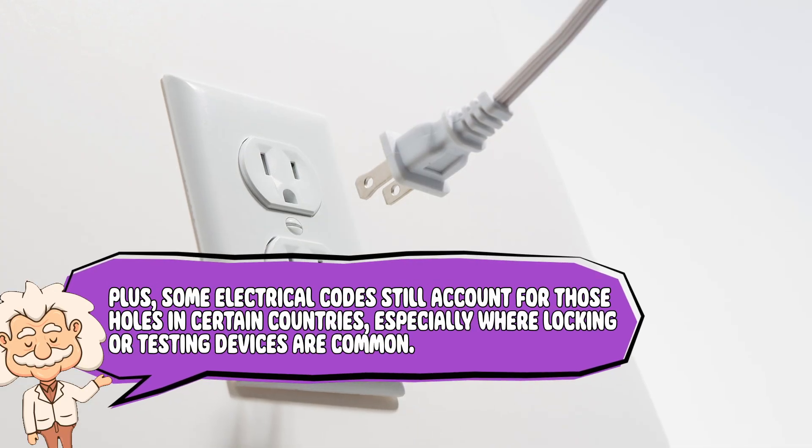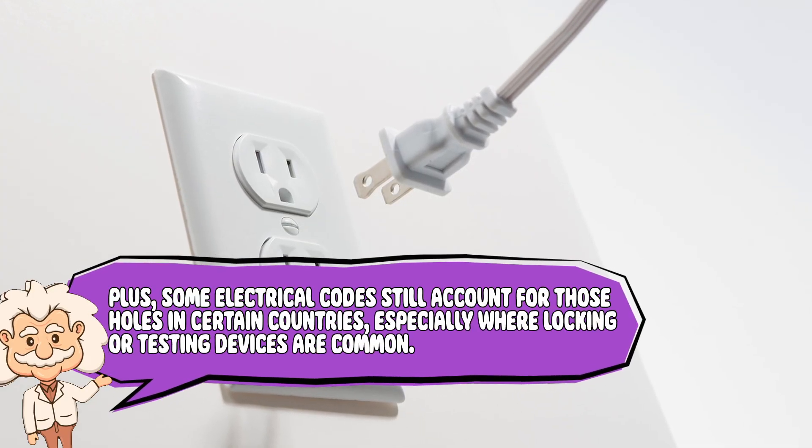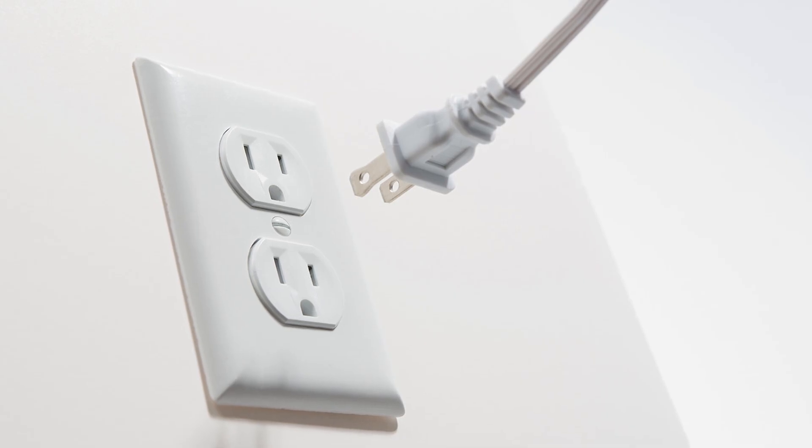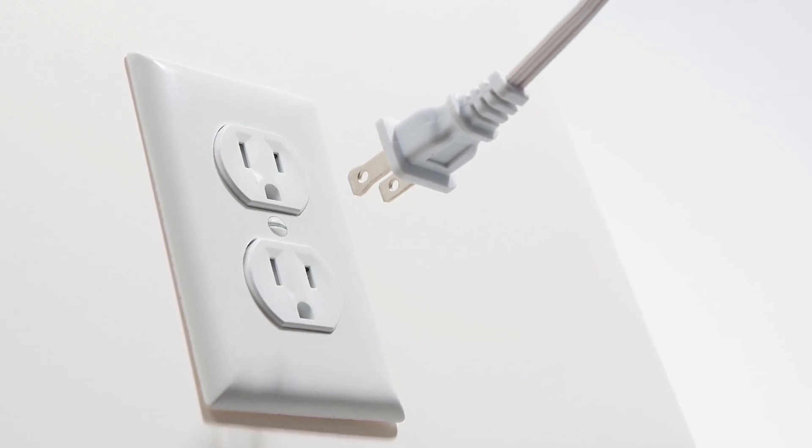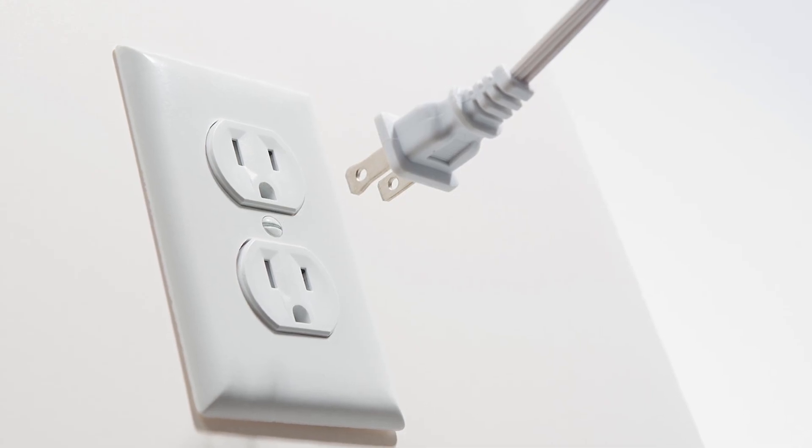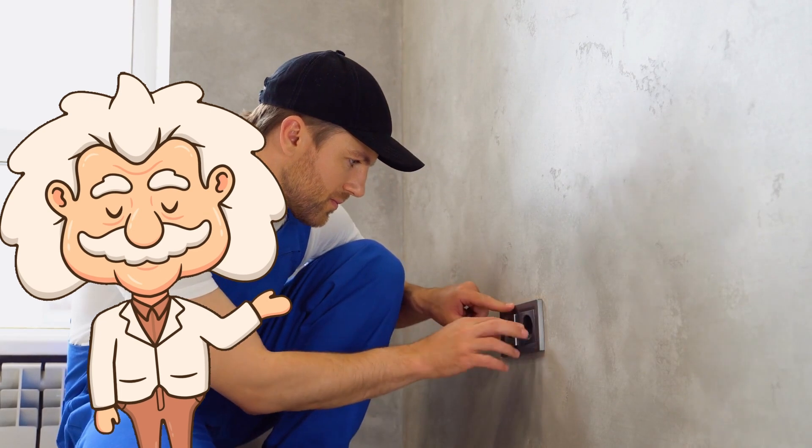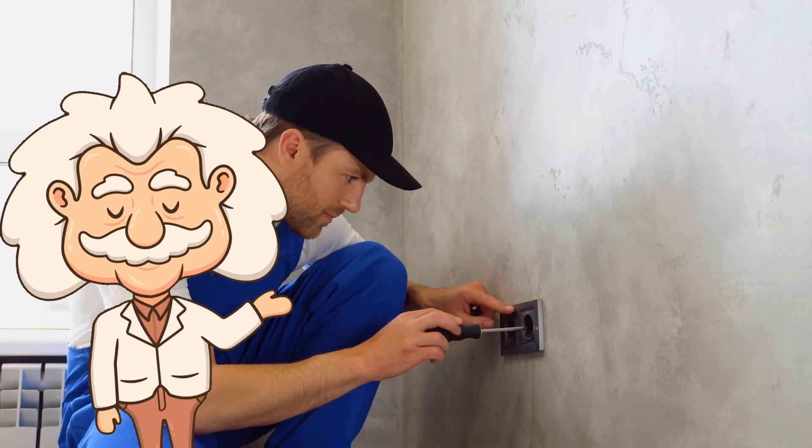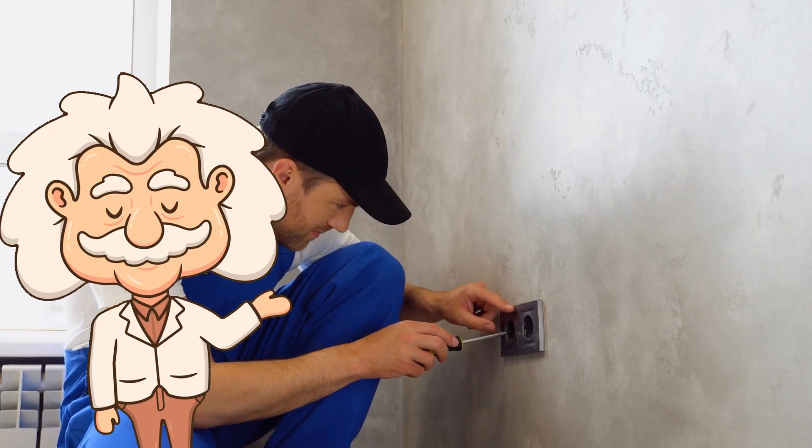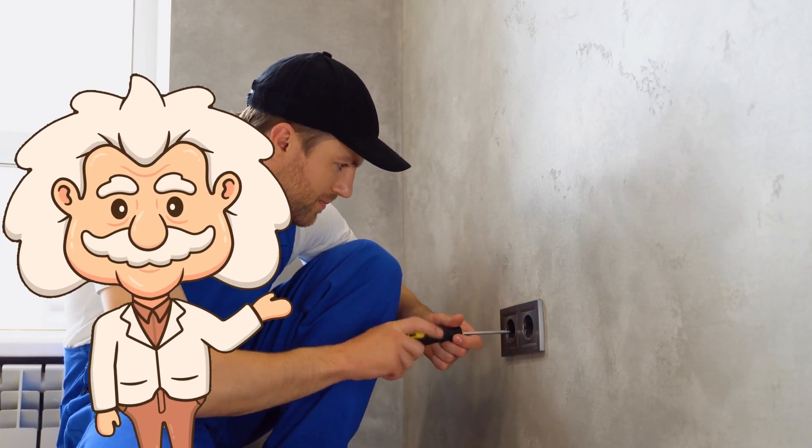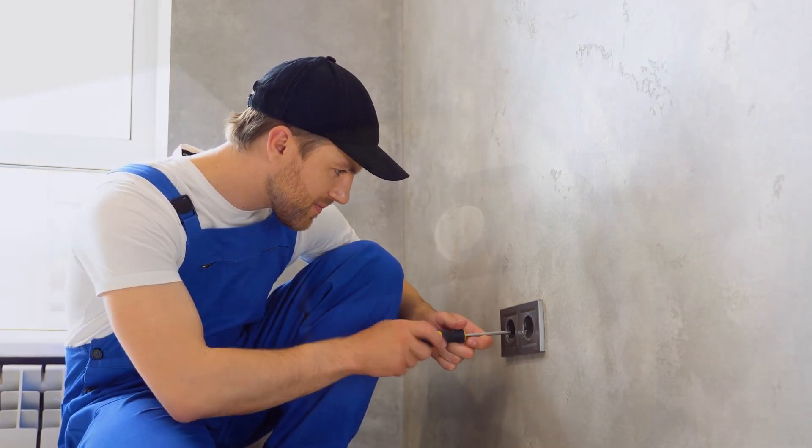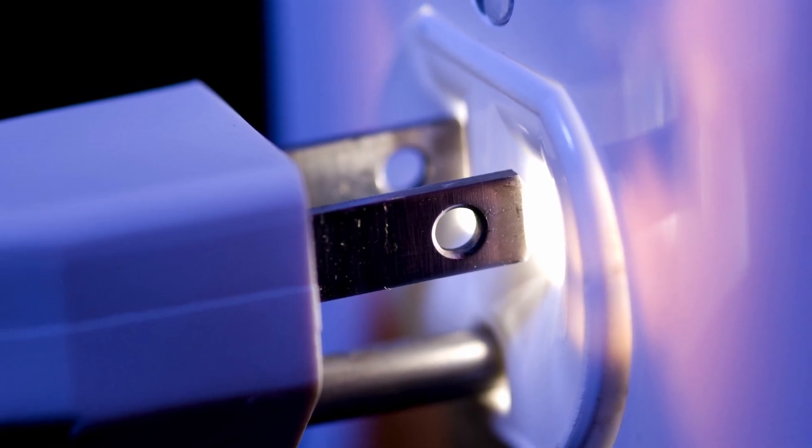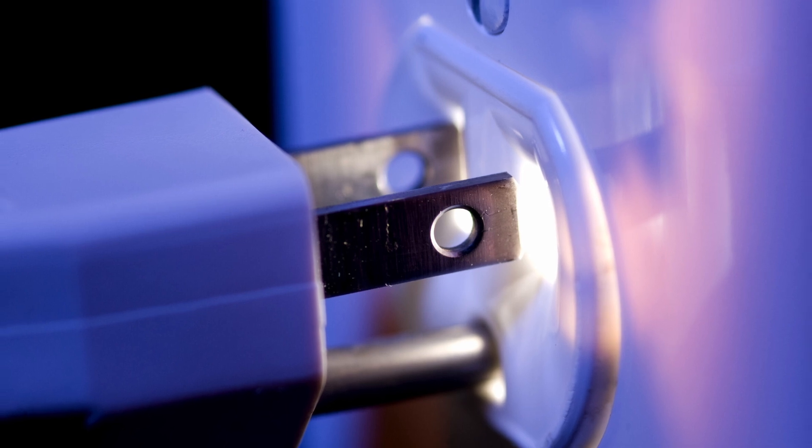Plus, some electrical codes still account for those holes in certain countries, especially where locking or testing devices are common. It's a universal feature that keeps things compatible, and no one wants to be the company that makes a holeless plug that suddenly doesn't fit some power strip in Wisconsin. And there's something poetic about it. The holes are tiny relics of a time when engineers designed for both function and flexibility. They didn't know every future outlet or gadget, but they built in something that would always work, no matter what. It's like a small reminder that sometimes the best designs are the ones you never think about. The ones quietly doing their job every day while you scroll TikTok with your charger plugged in.